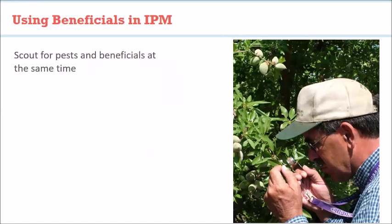Last week I talked a lot about monitoring — getting out in the orchard, looking for pests — and it's so important. You're going to learn about these beneficials now to watch for them as well, because that's going to help you make decisions on whether you need to intervene on the pests that you're seeing.